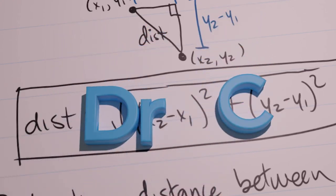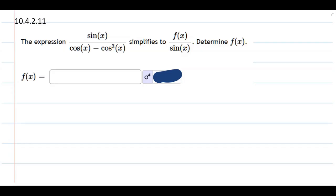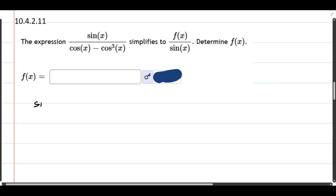This problem we start with sine over cos minus cos cubed, and it's supposed to simplify to a function over sine. So let's go ahead and write the starting sine over cos minus cos cubed.